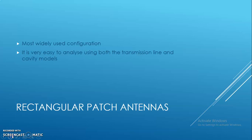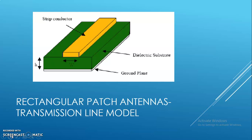Next is the rectangular patch antennas. It is the most widely used configuration, very easy to analyze using both the transmission line and cavity models. This is a basic structure of a transmission line model. Because the dimensions of the patch are finite along the length and width, the fields at the edge of the patch undergo fringing. The figure shows two radiating slots of the microstrip antenna.